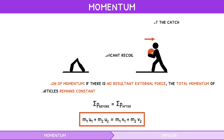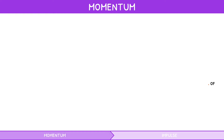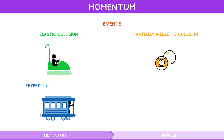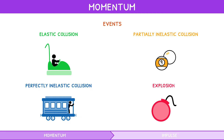The IB expects you to be able to describe four types of events wherein the law of conservation of momentum is obeyed: elastic collisions, partially inelastic collisions, perfectly inelastic collisions, and explosions.